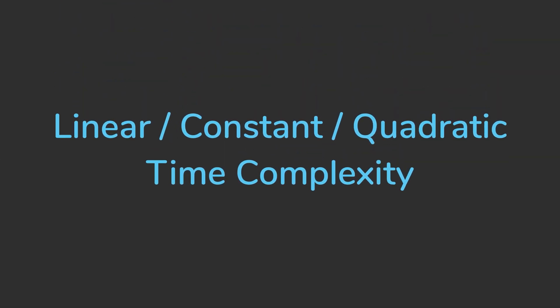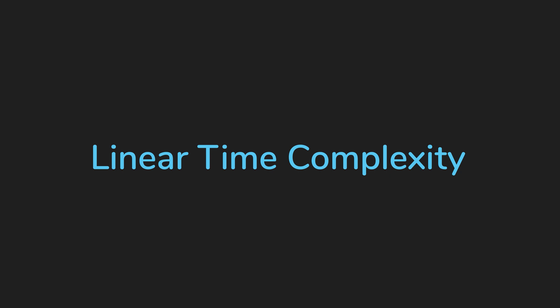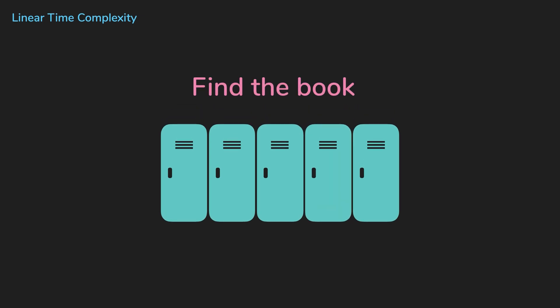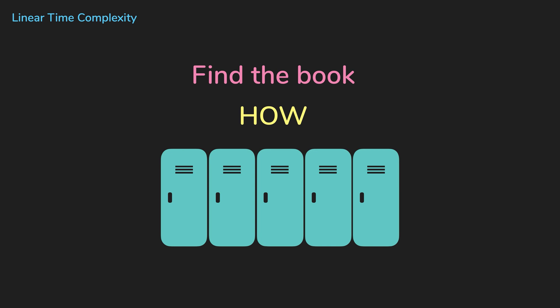Different time complexities: linear, constant, quadratic. Let's say there is a series of lockers and you have a book in one of those lockers. Your task is to find the book and how you find the book represents the algorithm you're using.